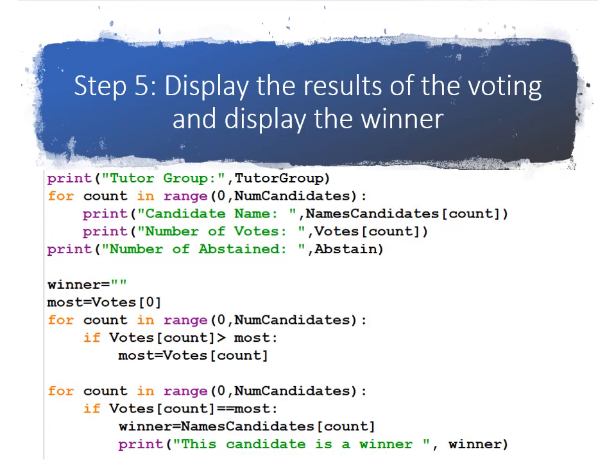Finally, step five is the last step. It's going to display the results of the voting. So we're going to print the tutor group name. We're going to run a for loop to print each candidate's name and how many votes that candidate got. And we're also going to print how many students abstained. We're also going to find the most number of votes. So we need to use a for loop. Once we have extracted what's the most number of votes, we use another for loop to see which candidates had that number of votes, and we can print them as the winners.